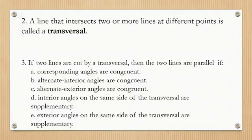A. Corresponding angles are congruent. B. Alternate interior angles are congruent. C. Alternate exterior angles are congruent. D. Interior angles on the same side of the transversal are supplementary. E. Exterior angles on the same side of the transversal are supplementary.